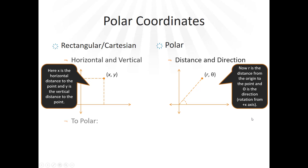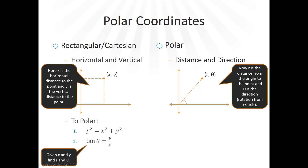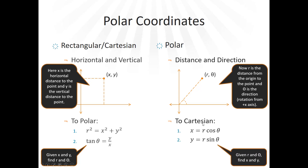We can also convert coordinates and equations using a couple of equations. If we're in the Cartesian coordinate system — given x and y and trying to find r and theta — we use r squared equals x squared plus y squared to find r, and tangent of theta equals y over x to find theta. If we're in the polar coordinate system and trying to convert to Cartesian, we use x equals r cosine of theta and y equals r sine of theta. These should look familiar — we've seen these before, for example with vectors.